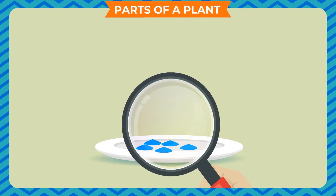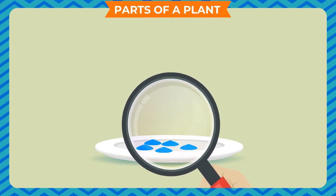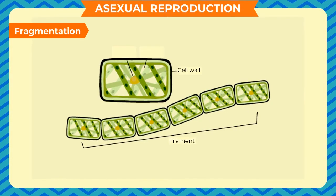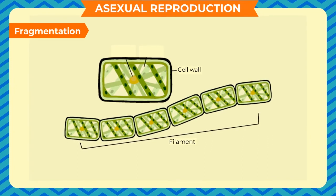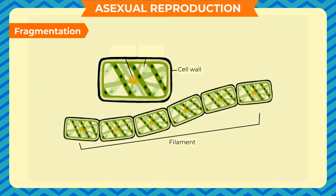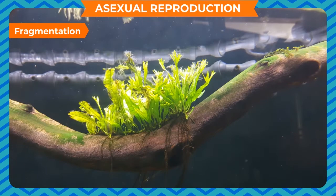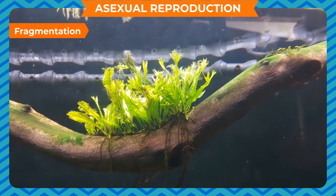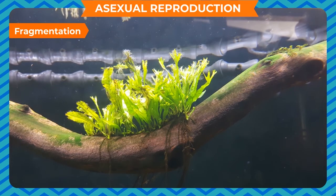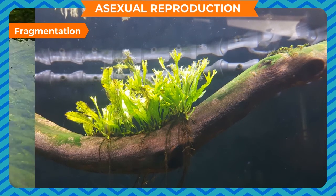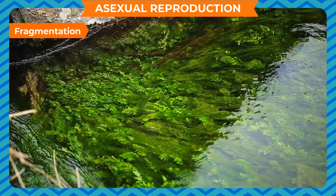Draw a simple line diagram of what you see on the slide. Fragmentation: In this process, the plant body breaks into fragments. Each fragment grows up into a new plant. This process is called fragmentation and is commonly seen in aquatic algae.